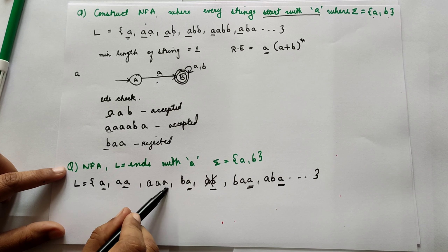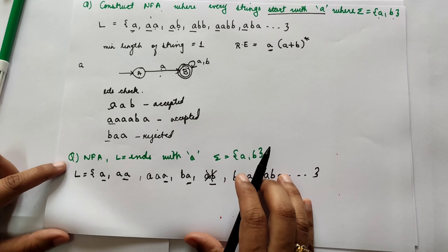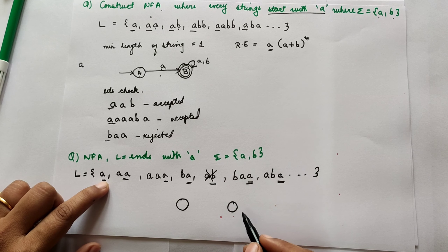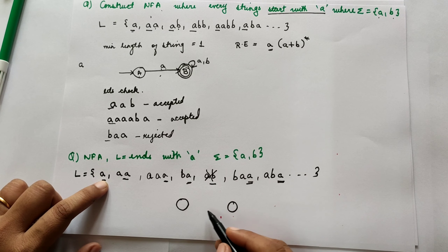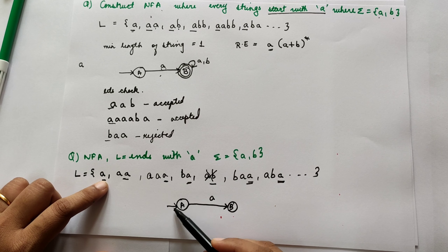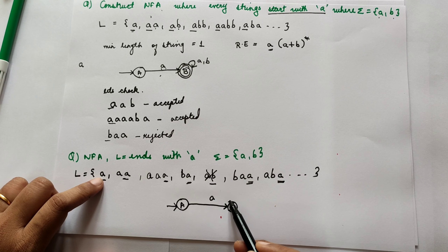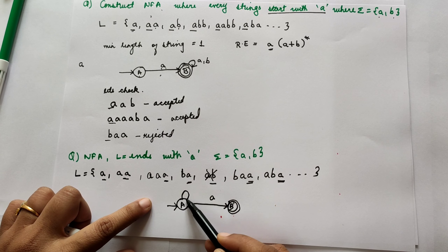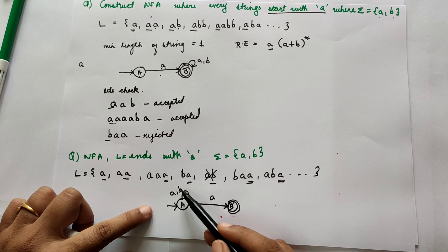For this NFA, the minimum length string is A, which is 1. The number of states would be 1 plus 1, which equals 2. Drawing these two states — an initial state and a final state — the final state is the accepting state because A by itself is in the language. Before the final A, there can be any combination of A and B, so we take a self-loop or closure of A and B on the initial state.